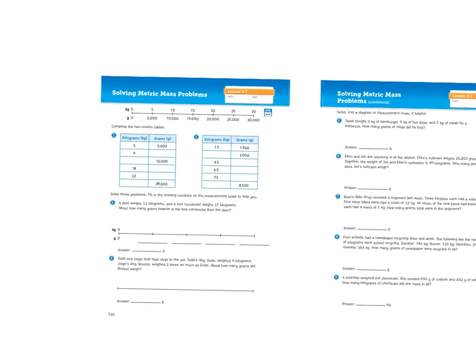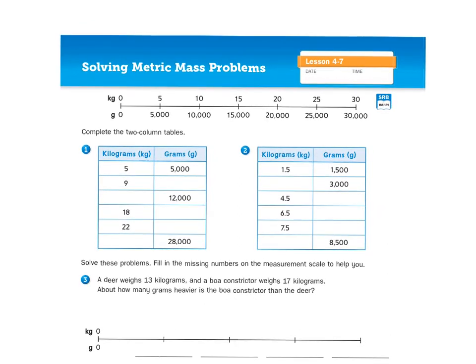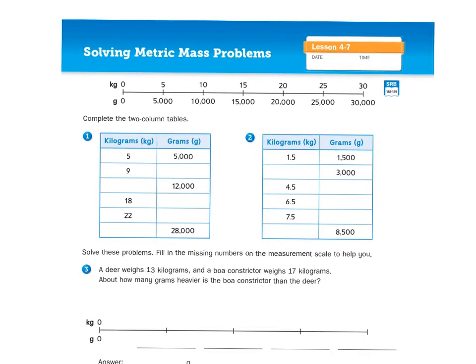If you take a look at this metric scale at the top of page 124, you see that we have a conversion between kilograms and grams. Grams are the base unit of measuring mass, or in simpler terms, weight. And for every 1,000 grams, that's the equivalent of 1 kilogram. Kilo is a prefix that represents 1,000.